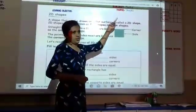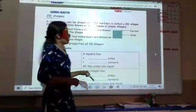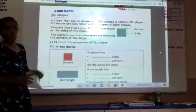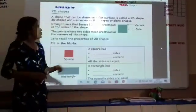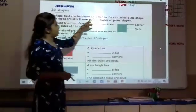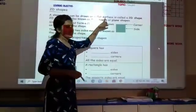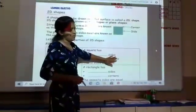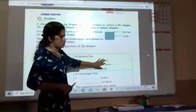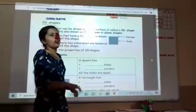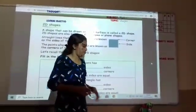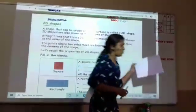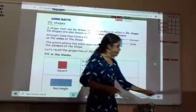Today we are going to study a shapes lesson. In shapes, you are going to study 2D shapes. What are 2D shapes? 2D shapes are shapes that can be drawn on a flat surface. A flat surface means on this whiteboard I can draw a 2D shape, on a floor you can draw a 2D shape, and on a piece of paper also you can draw a 2D shape.